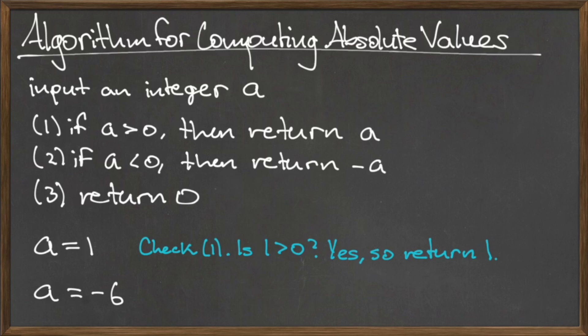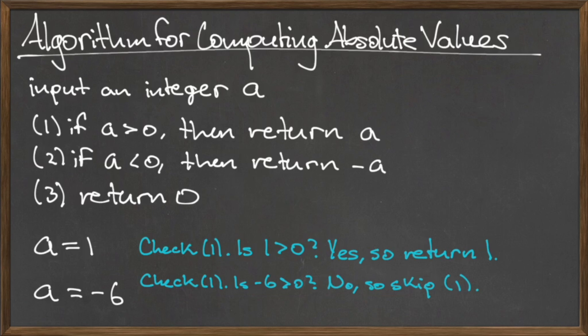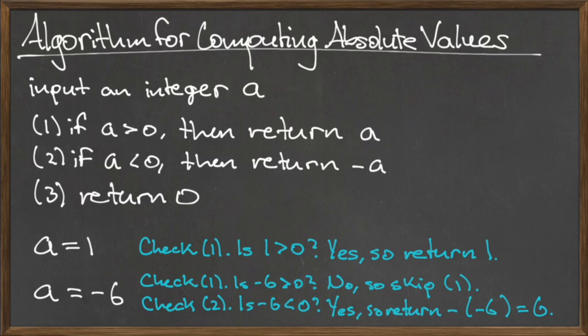Now let's run the algorithm again with the input a equals negative six. The first conditional statement checks whether a is greater than zero. Negative six is not greater than zero, so the instructions to return a are skipped, and we proceed to step two. Step two asks us to check if a is less than zero. Negative six is less than zero, so the instructions to return negative a are followed, and our algorithm terminates immediately. Negative negative six equals positive six, so for the input a equals negative six, our output is positive six.